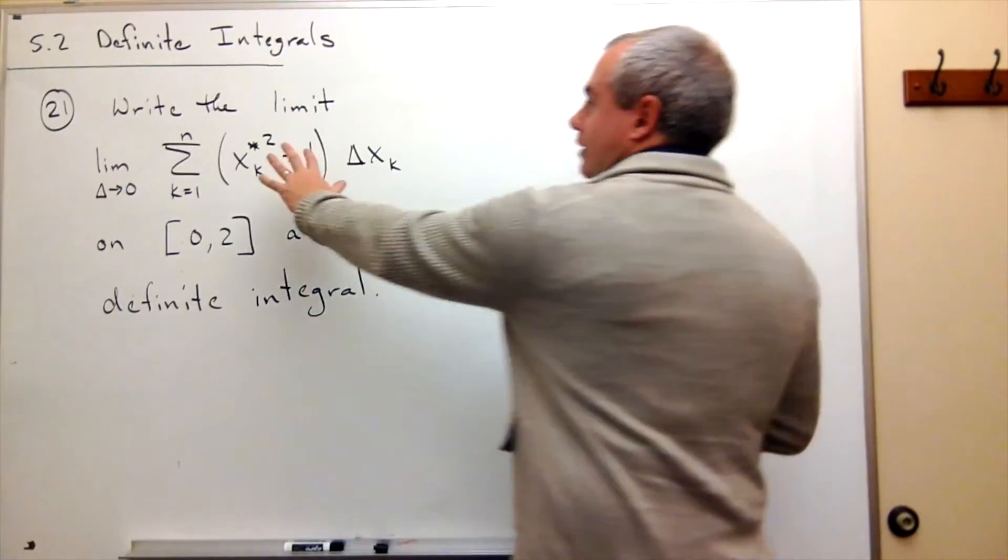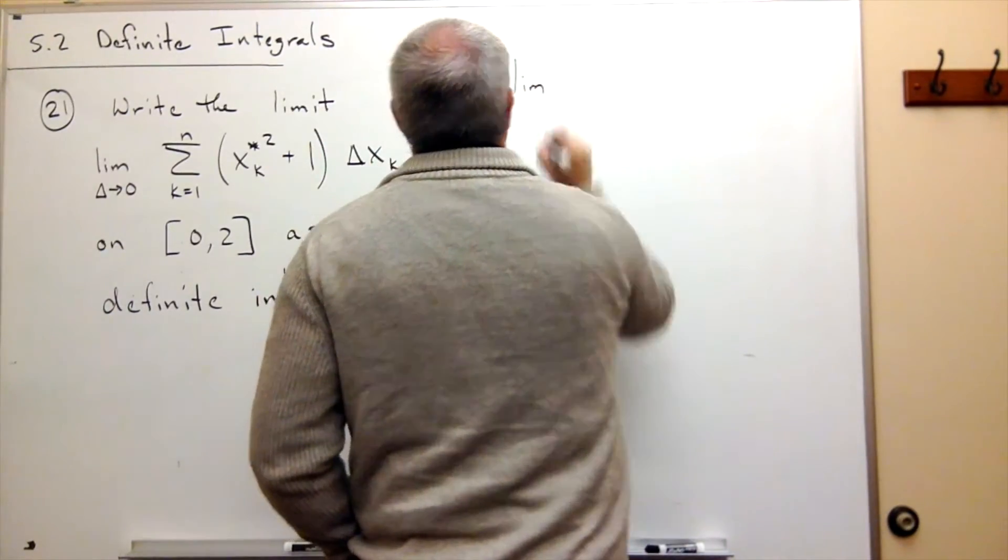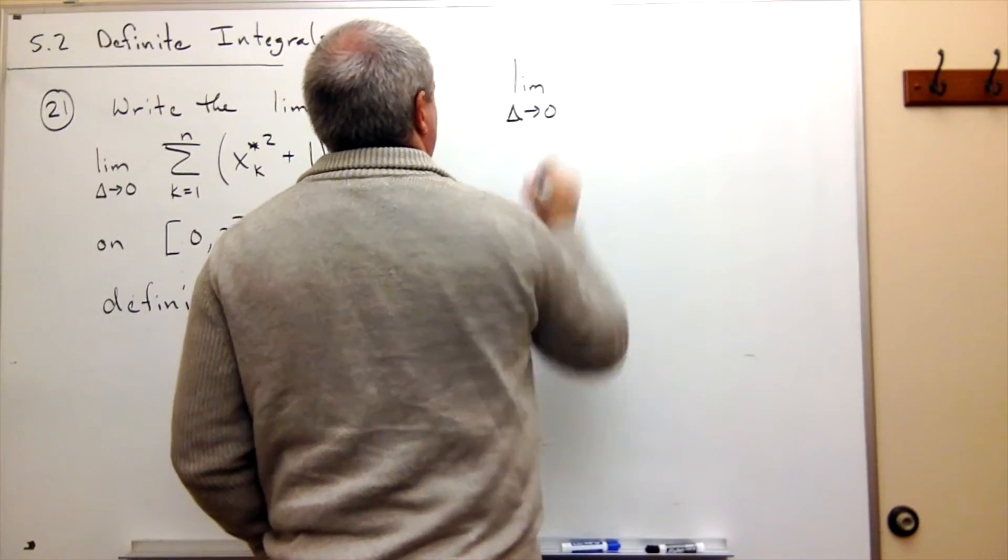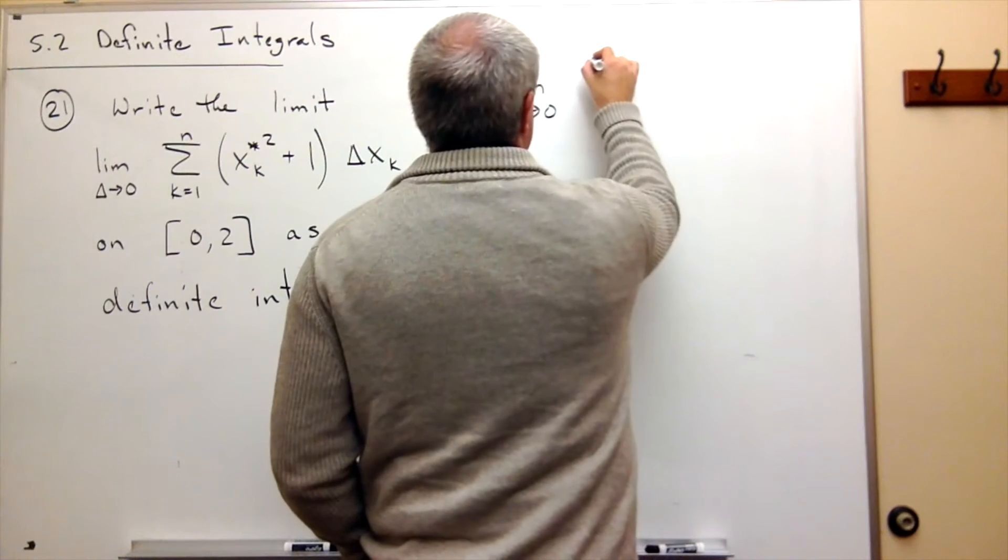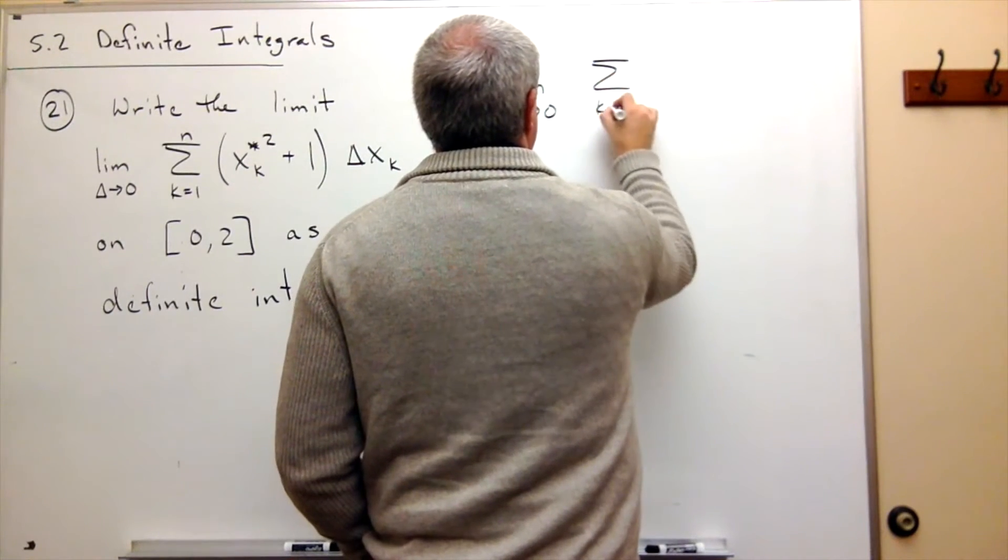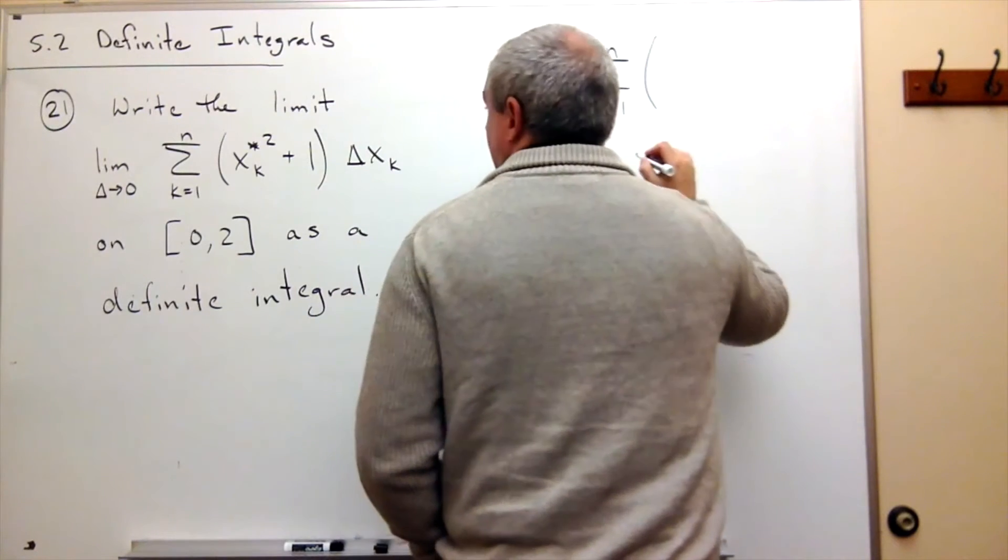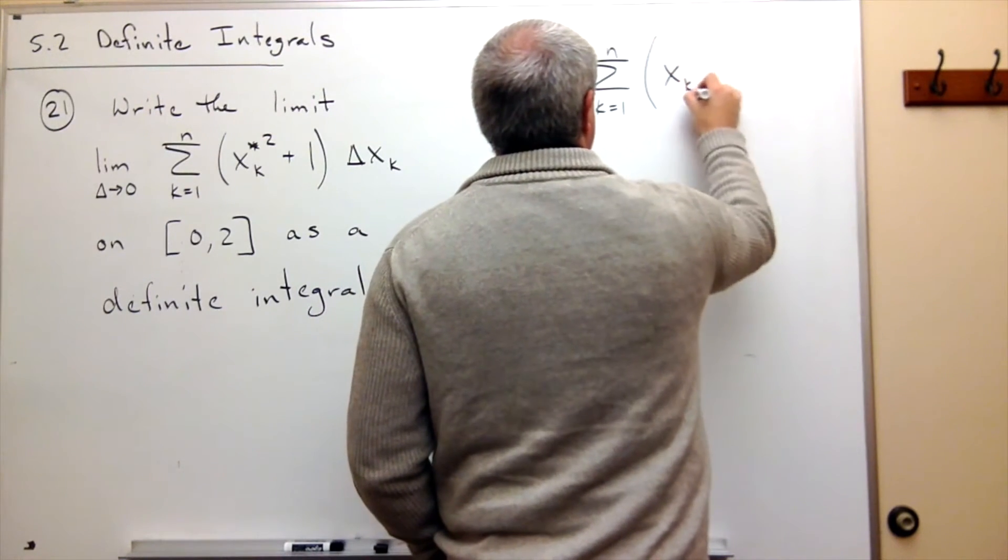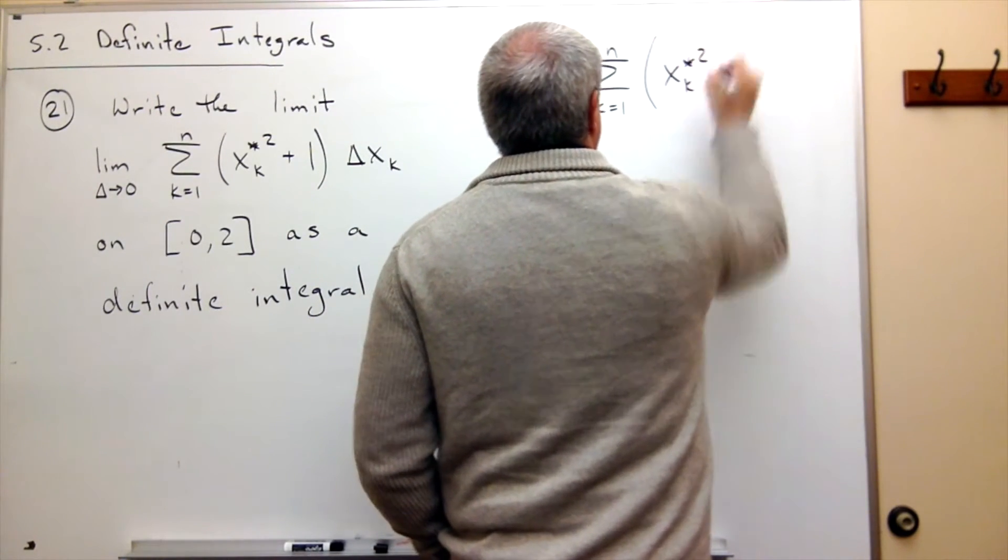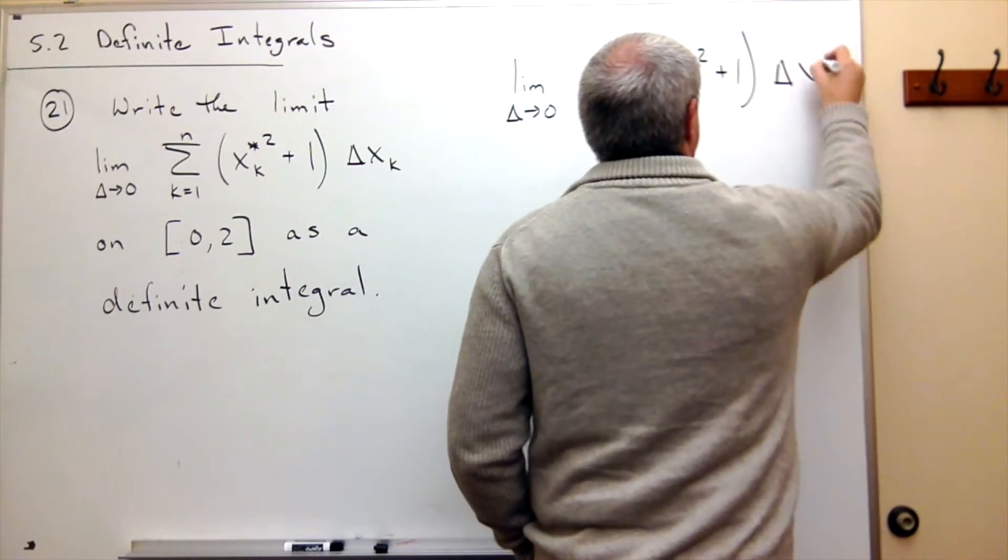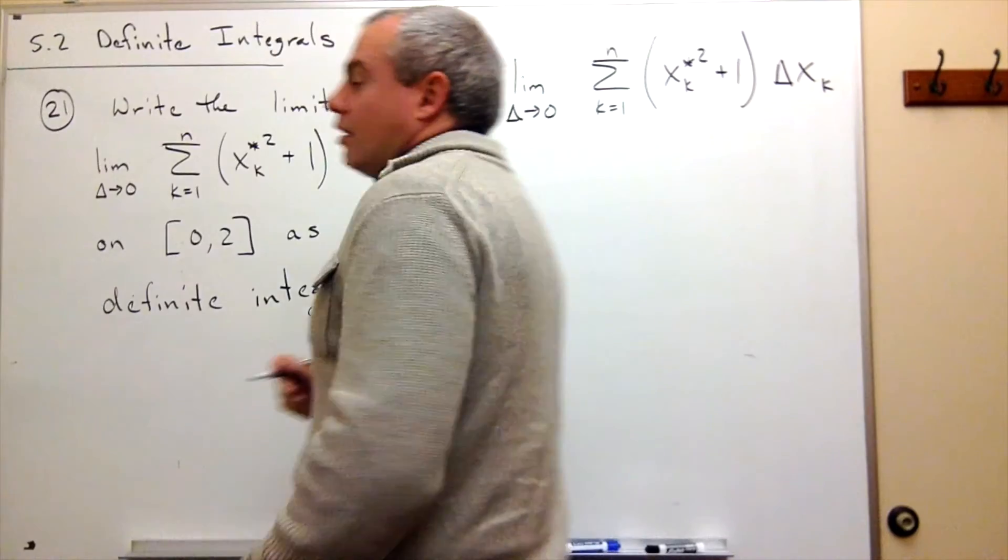Let's rewrite this sum over here so we can look at the different pieces. This says limit as delta goes to 0 of the sum k going from 1 to n of x sub k star squared plus 1 delta x sub k.